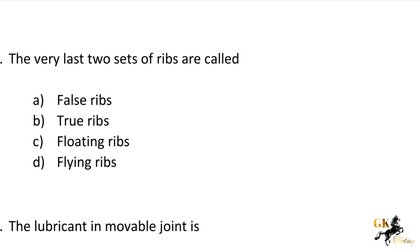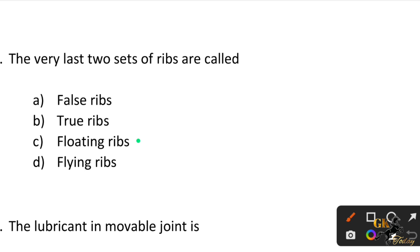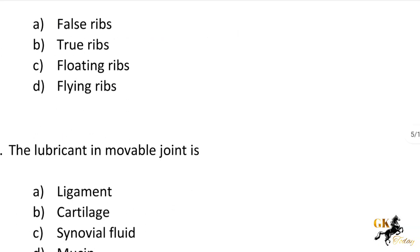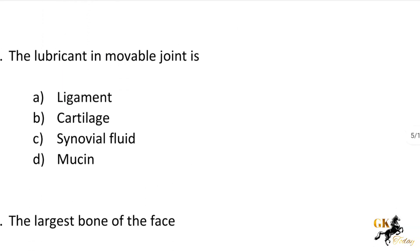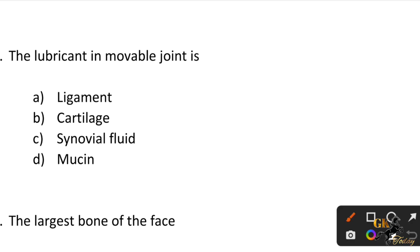Next question: The very last two sets of ribs are called — Option A: False ribs. Option B: True ribs. Option C: Floating ribs. Option D: Flying ribs. The answer is Option C: Floating ribs. Next question: The lubricant in a movable joint is — Options: Ligament, Cartilage, Synovial fluid, Mucin. The answer is Option C: Synovial fluid.